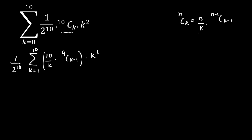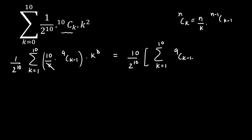Because I applied the formula, k and k cancel out. The expression becomes (1/2^10) multiplied by the summation, k varying from 1 to 10, of 10 times 9C(k−1). The 10 comes outside, leaving the summation of 9C(k−1).